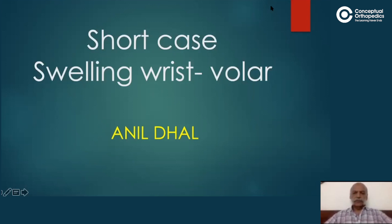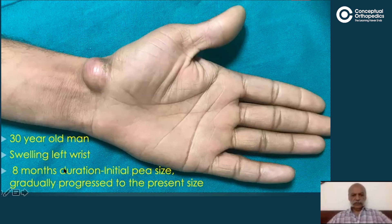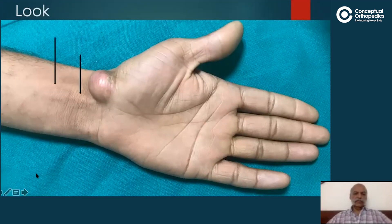This particular case is a swelling on the volar aspect of the wrist. To briefly recapitulate what we discussed in the previous session: this patient was a 30-year-old man with a swelling on the left wrist — his left dominant hand. The swelling had been present for 8 months; it started as the size of a pea and gradually progressed to its present size.